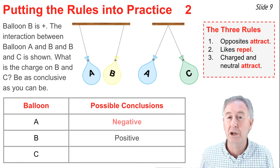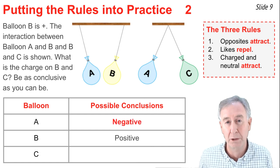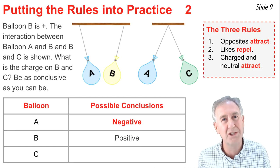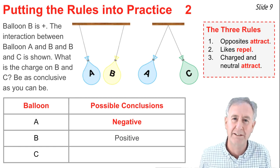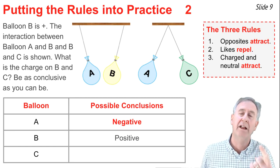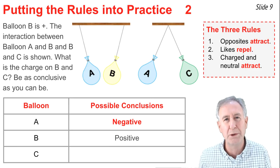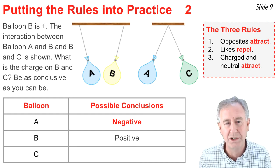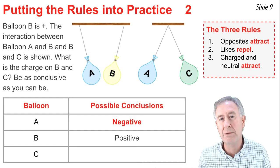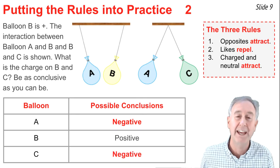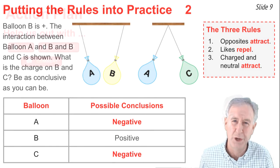Then when we determine the charge on balloon C, we observe that it's repelling balloon A, which we've just determined is negative. There's only one reason two objects repel — rule two: they must have like charge. So C must have the like charge of A. Balloon C must have a negative charge.